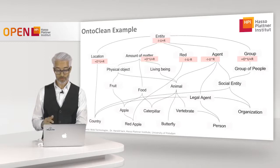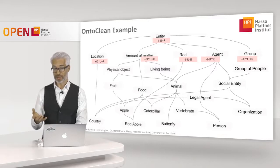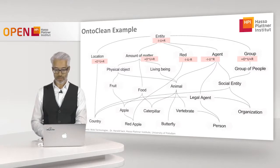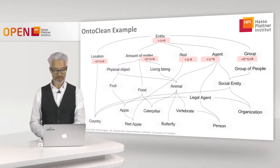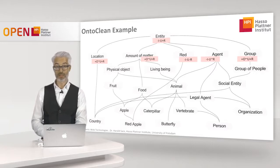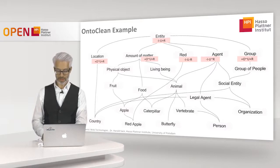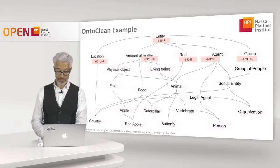For 'group': groups can have a common identity criterion if you identify them as having something in common. On the other hand, groups are not necessarily considered one whole — a group of people can consist of several members — so it has anti-unity. But if the group ceases to exist, the group is gone, so it is rigid.